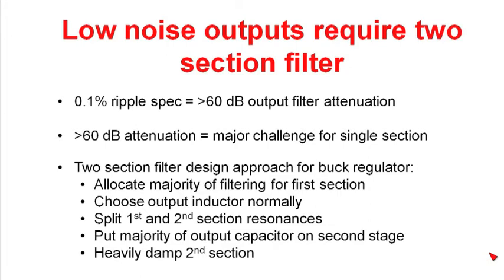There's several major issues in dealing with a two-section filter. One of the big ones is that you have a potential for 360 degrees of phase shift in your filter, and that's going to create quite an issue for your control loop.